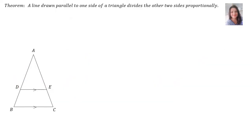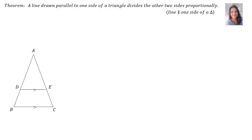Let's start with the first theorem. Remember, you must also know the proof of this theorem for exam purposes. The theorem says a line drawn parallel to one side of a triangle divides the other sides proportionally. The abbreviation you will use in the exam is: line parallel to one side of a triangle.